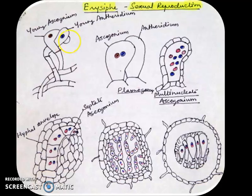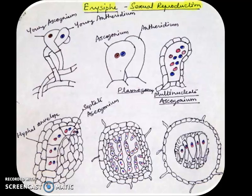When the ascogonium and antheridium come in contact with each other, at the point of contact the wall is dissolved and all the contents of the antheridium — that is, nucleus and cytoplasm — will be transferred to the ascogonium. This process is called plasmogamy.